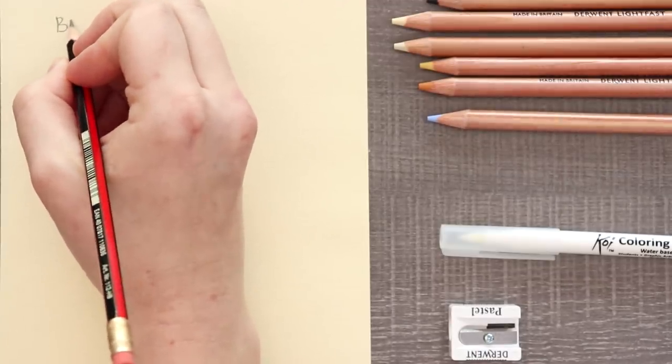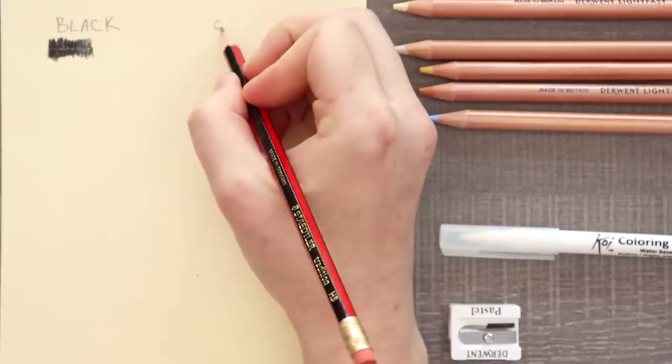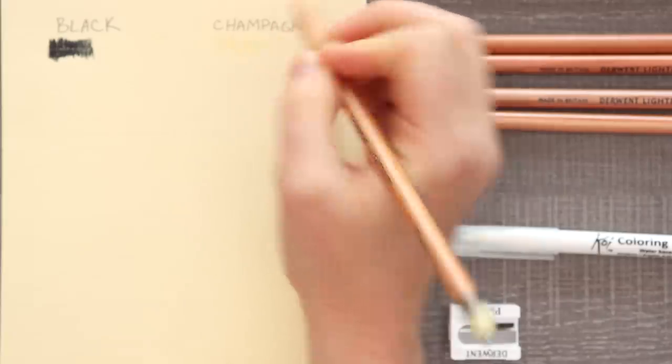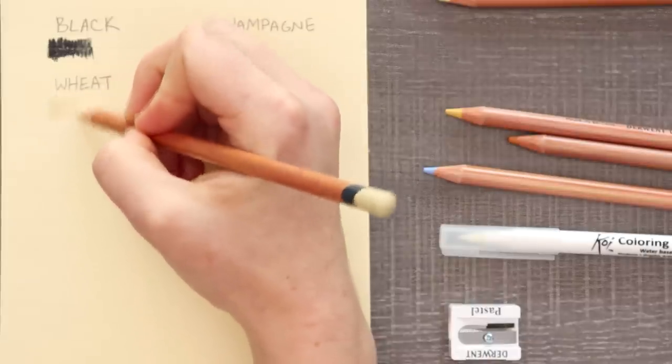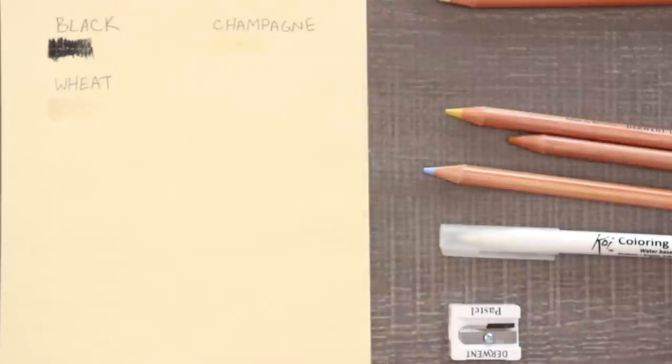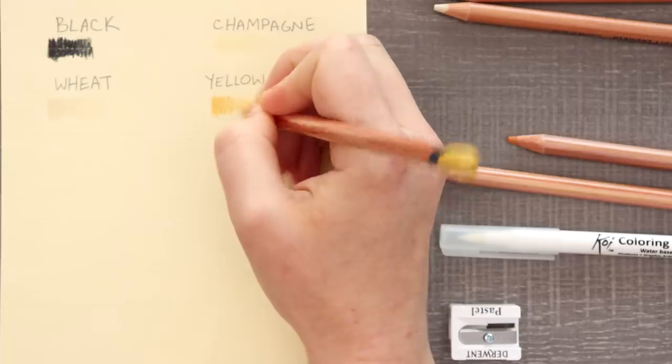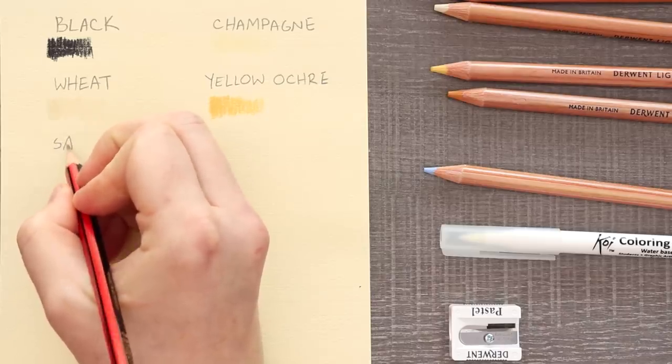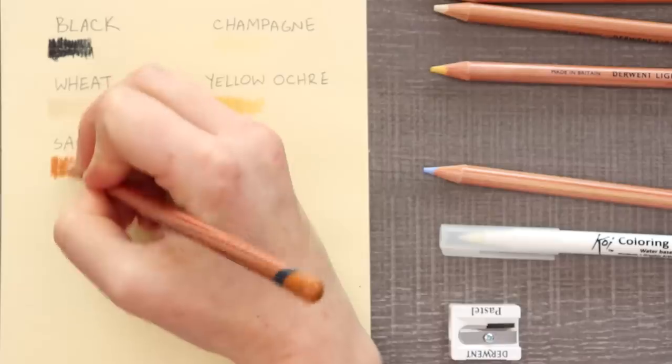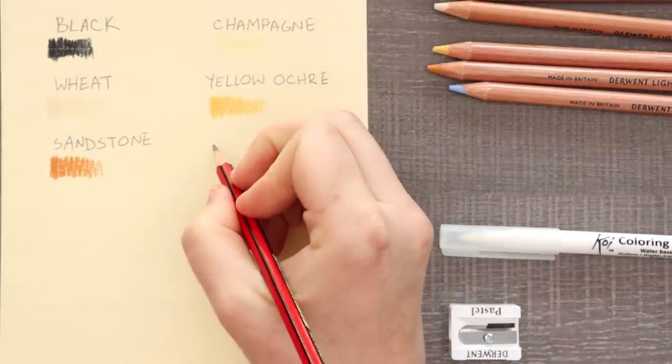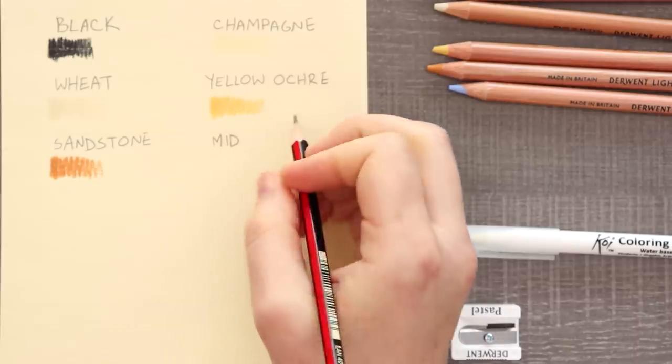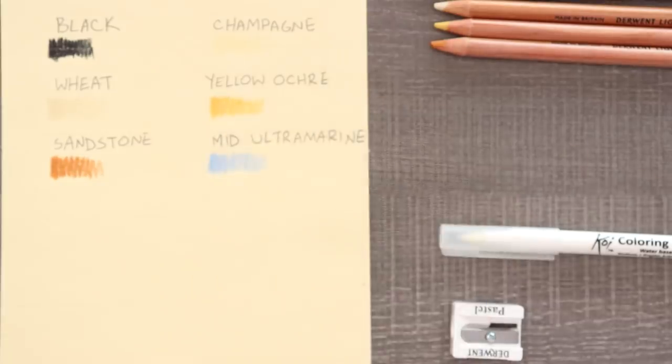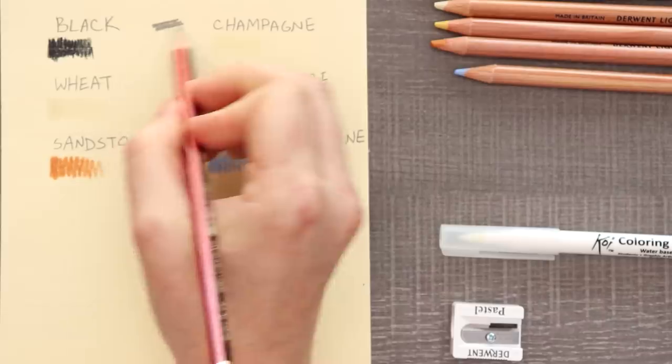All right, first we've got black. Feels like a pencil. All right, next up we've got champagne. Oh, you can barely see this on this champagne colored paper. All right, next is wheat. Wheat is slightly less yellow than champagne. Yellow ochre. That's a nice yellow color. I really like sort of browny yellowy mustardy yellow colors. Next up is sandstone. A nice browny yellow. And last we've got mid ultramarine. This is like the blue color I use for my channel. Maybe I should draw myself. All right, I don't know. This pencil feels like a pencil.